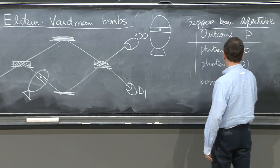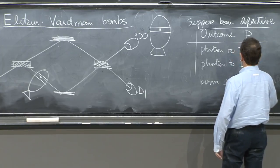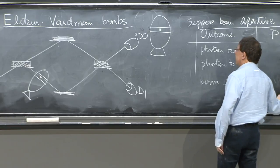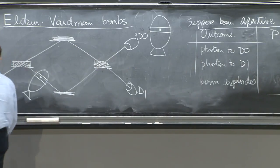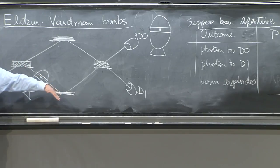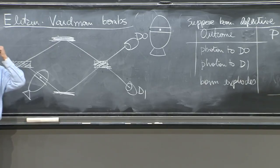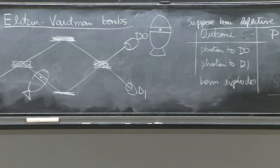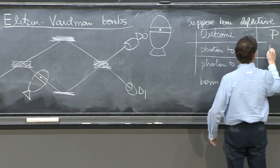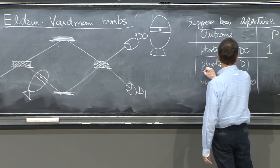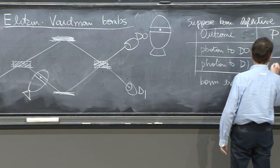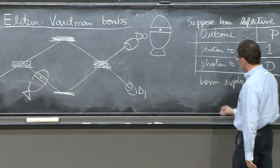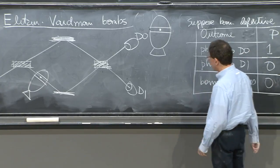Bomb explodes. Well, we said the bomb is defective. So if the bomb is defective, it's like a detector that doesn't work and lets the photons go through. So if the bomb is defective, as if there's no bomb here, and you'll have the situation where all is open. So there will be a probability of 1 to get the photon to D0, a probability of 0 to get the photon to D1. And the bomb doesn't explode, probability of 0.